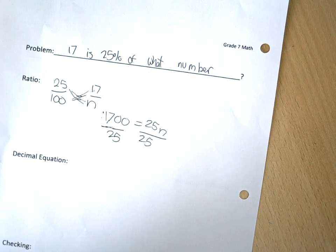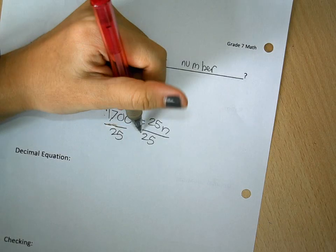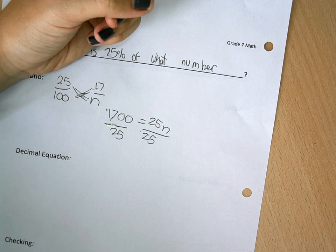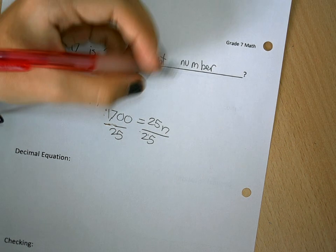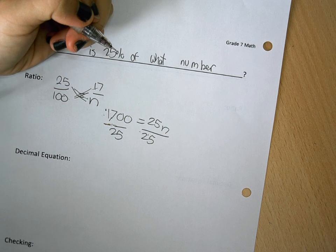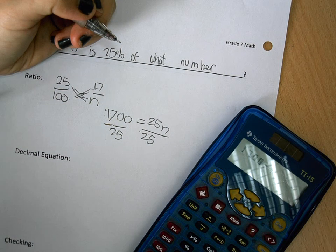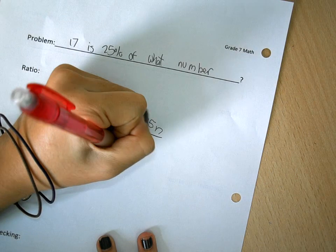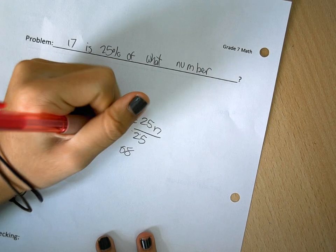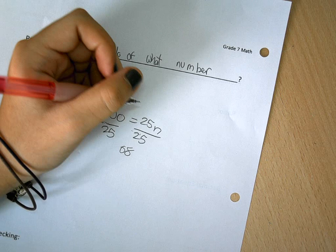And you take 1700 divided by 25, which is 68. That equals to 68.